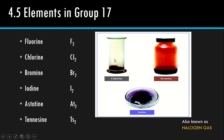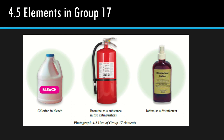Some uses of Group 17 elements: chlorine is used in bleach, dalam Clorox. So nama dia Clorox, asal perkataan chlorine, dia digunakan sebagai agent peluntur. Bromine as a substance in fire extinguisher. Iodine as a disinfectant — ubat kuning yang kita guna bila luka-luka tu untuk matikan kuman.